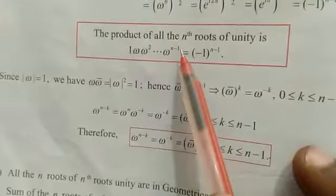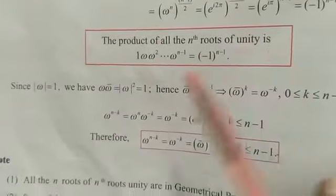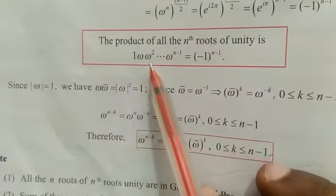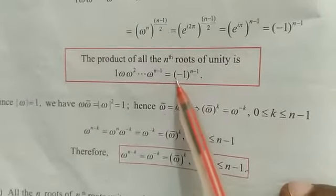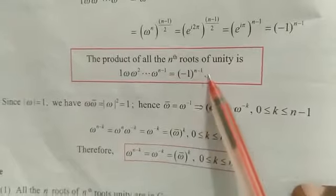The product of all the nth roots of unity is 1 into omega into omega squared etc. omega power n minus 1 always equal to minus 1 power n minus 1.